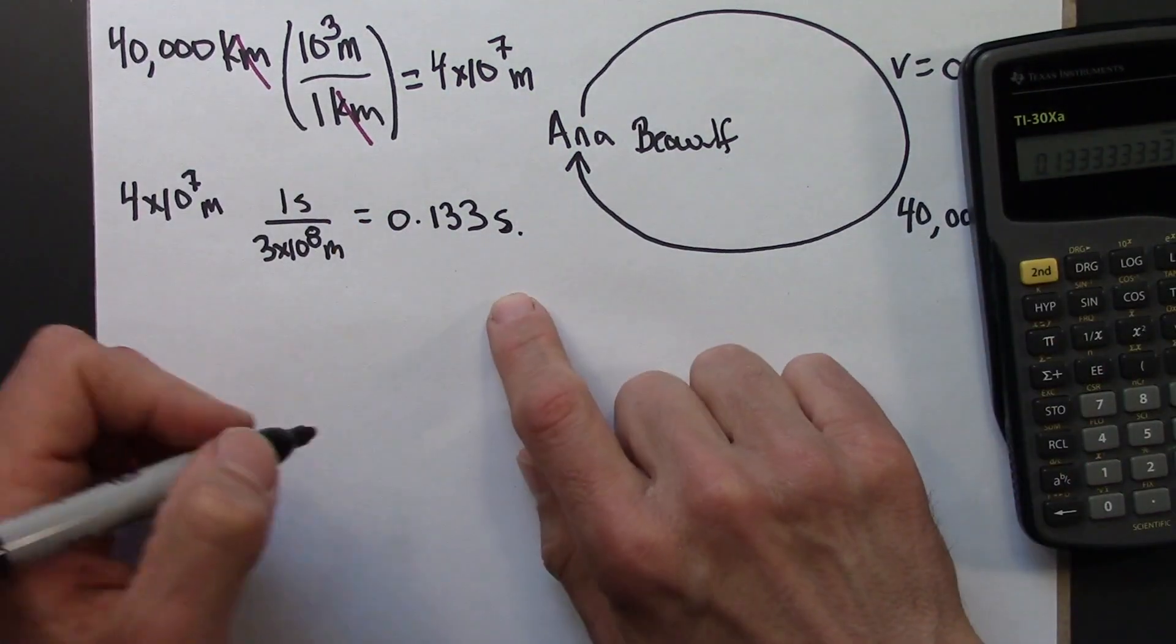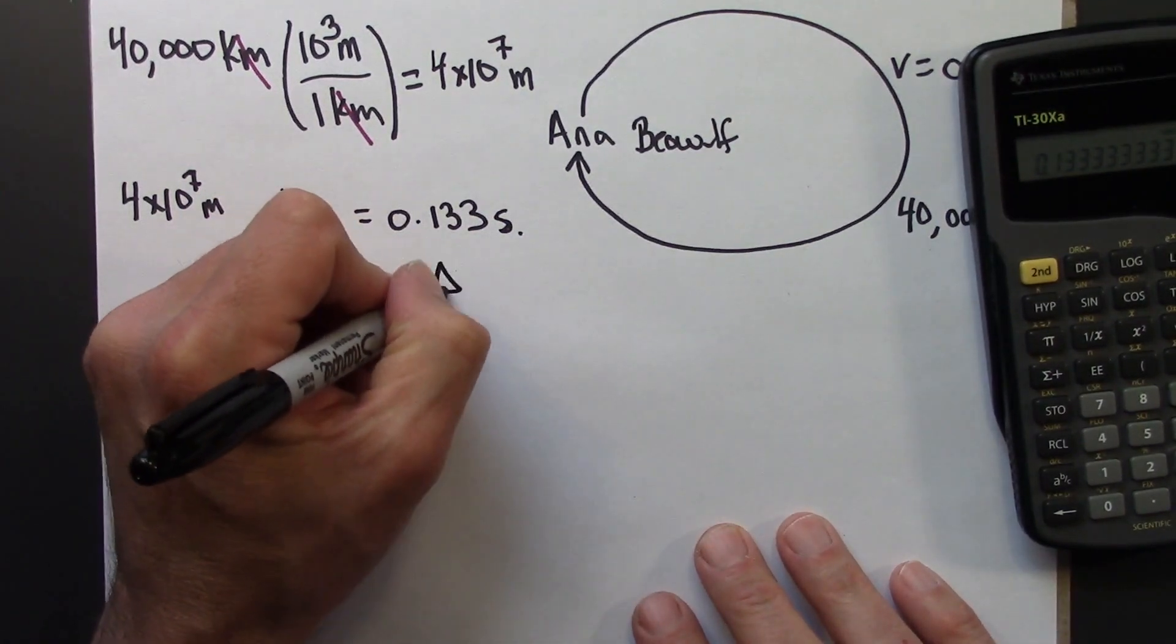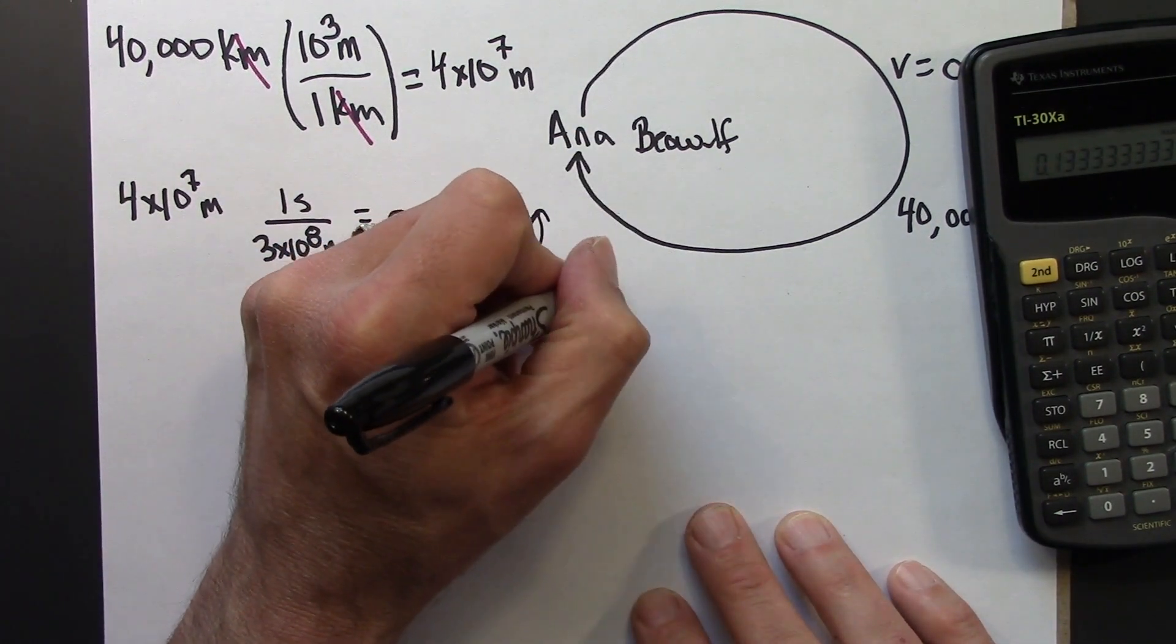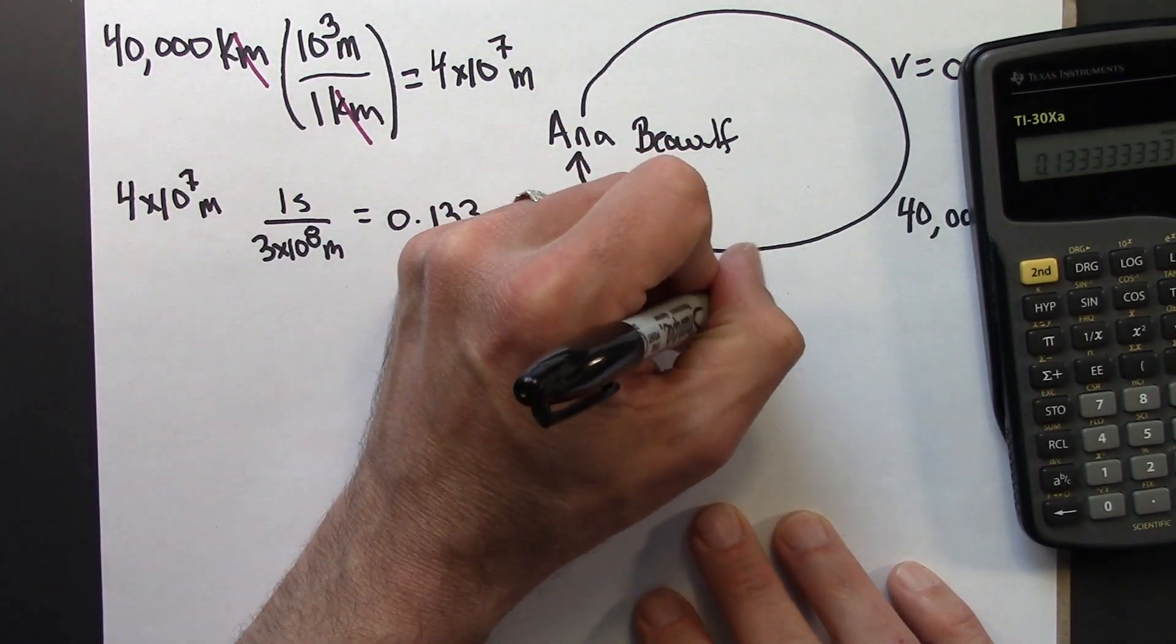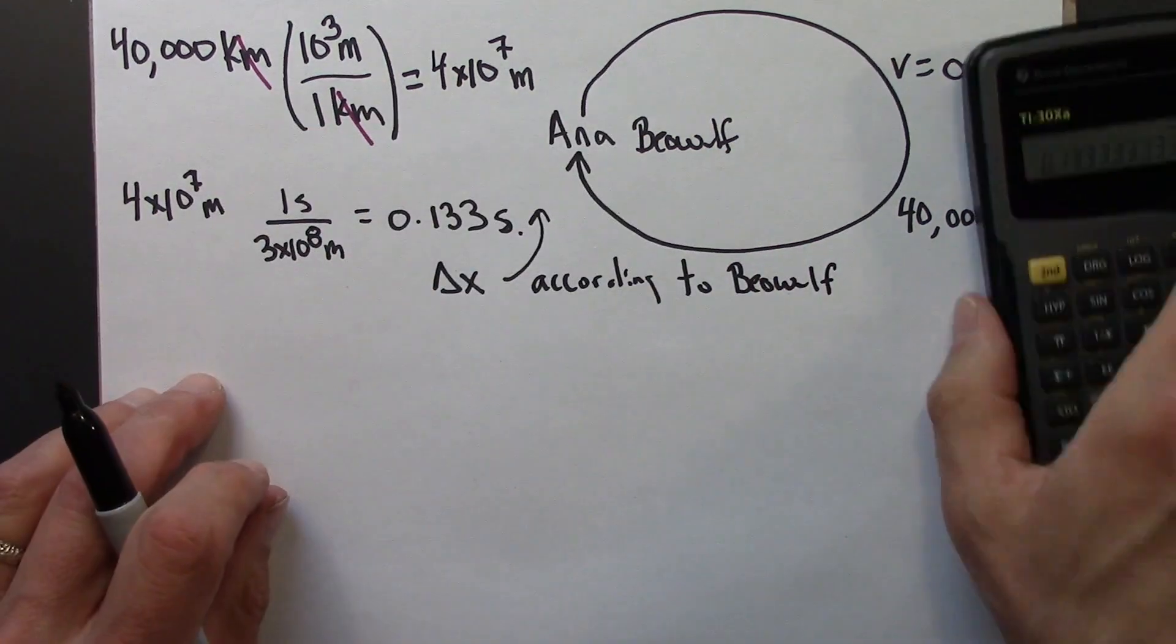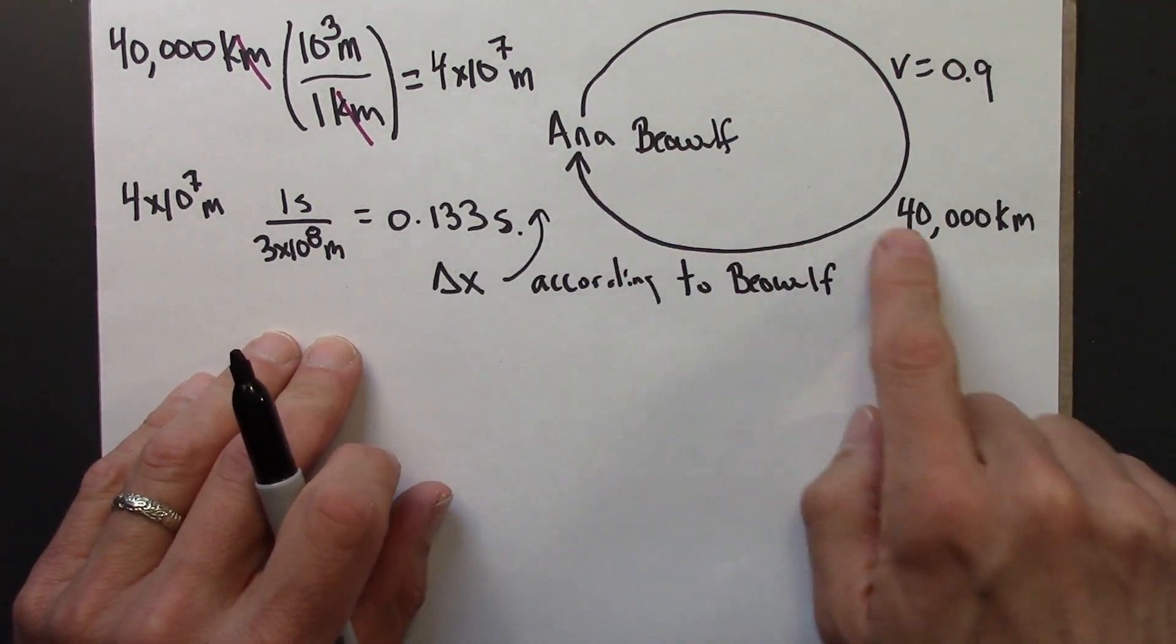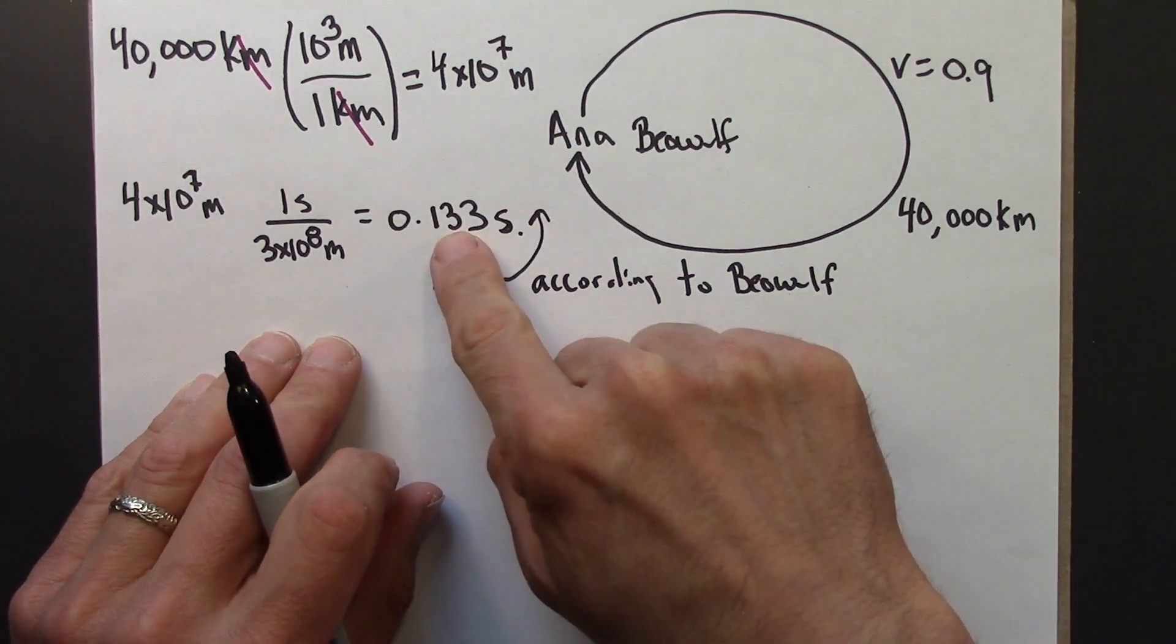So this is delta x according to Beowulf. Beowulf here on Earth sees Ana go all the way around the Earth. Beowulf knows the Earth's circumference is this, which is that.